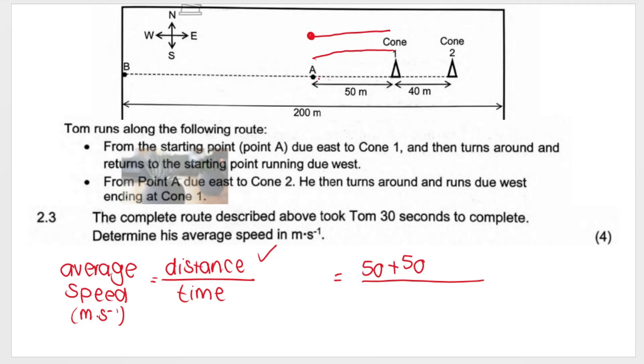So Tom went from A to cone 1, that's 50 meters. Then he returned back to the starting point, so he ran another 50 meters. Then from A, he went to cone 2, all this way, that's 90 meters. Then he turned around and ran west, ending at cone 1, so he went another 40 meters this way. So in total, he ran 230 meters. That is his total distance. Divided by the time, which is 30 seconds. My answer for speed is 7.67 meters per second. Remember, they want his speed in meters per second.